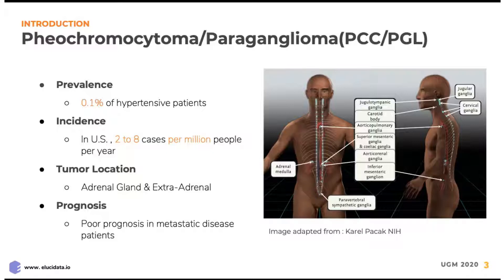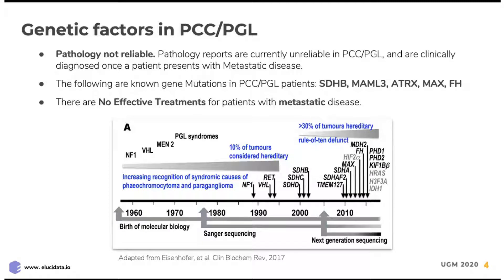If a patient has disease that has spread everywhere, or metastatic disease, the prognosis is actually poor. Over the last several years, we've learned that there are about 20 genes associated with pheochromocytomas and paragangliomas — more than any other endocrine tumor. When a patient presents for surgery and has their tumor removed, unfortunately, the pathologist is not able to tell you whether the patient is at higher risk for metastatic disease. Usually, we find out when the patient clinically presents with disease that has spread all over their body.